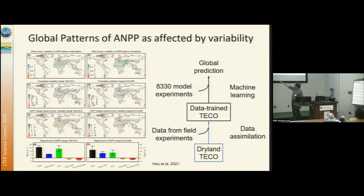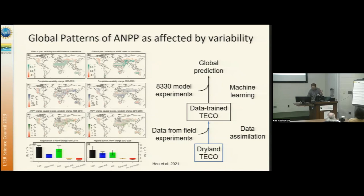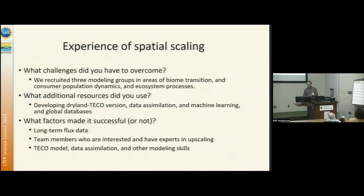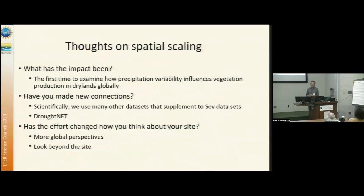Overall, total global dryland productivity is increased, as indicated by the black bar. So the increase in variability is actually favorable for productivity overall. Currently we have three modeling groups interested in scaling up, combining model-data simulation, machine learning, and a global database. The last point is that we try to connect broader scales and have a global perspective.